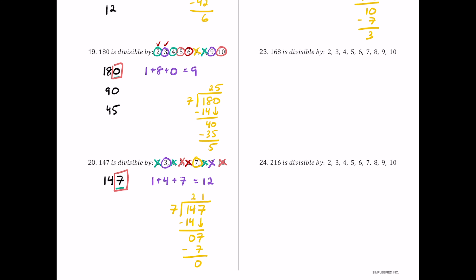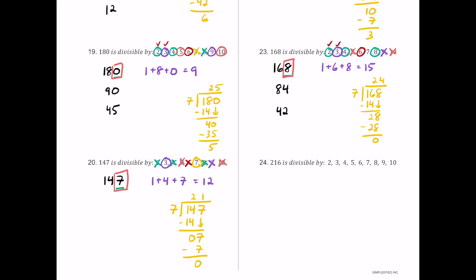For number 23, we have 168. The last digit is 8, even, so 2 works. Half is 84 — still even — so 4 works. Half of 84 is 42 — still even — so 8 works. The digit sum 1 plus 6 plus 8 is 15, a multiple of 3 but not 9. Since 2 and 3 both work, 6 works. The last digit is 8, not 5 or 0, so 5 and 10 fail. Dividing 168 by 7: 7 times 4 is 28, remainder 0, so 7 works.